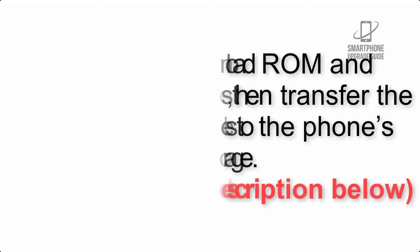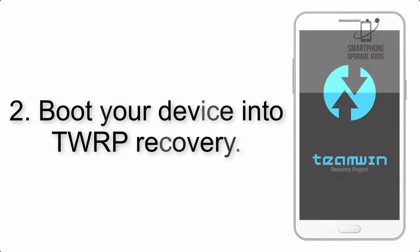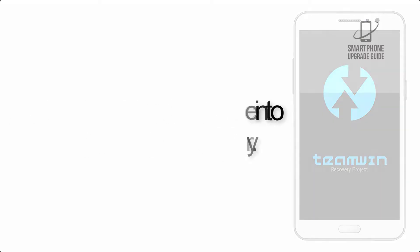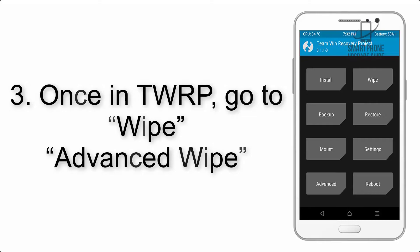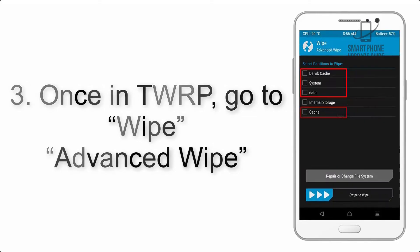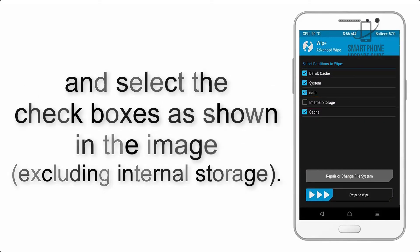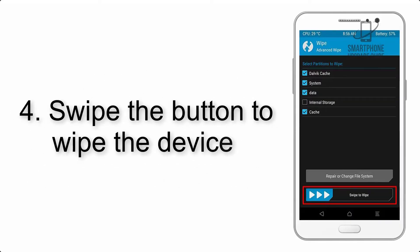Step 2: Boot your device into TWRP recovery. Once in TWRP, click on Advanced Wipe and select the checkboxes as shown in the image, excluding internal storage.